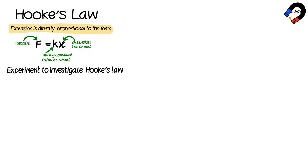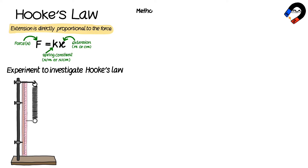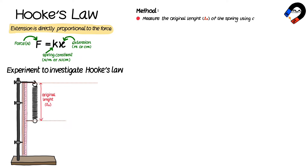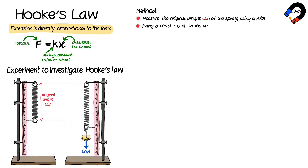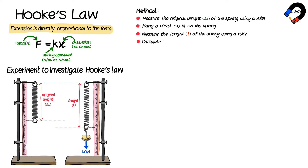The experiment to investigate Hooke's law: we will investigate the relationship between the load or force and the extension of the spring. Set up the apparatus as shown in the diagram. Measure the original length, L0, of the spring using a ruler. Hang a load of 1.0 newton on the spring and then measure the new length L. Calculate the extension by subtracting the original length L0 from the length L.